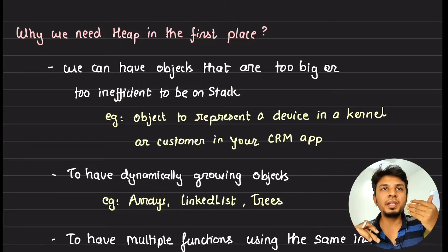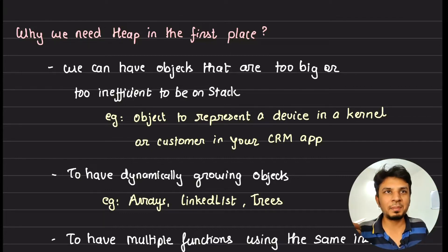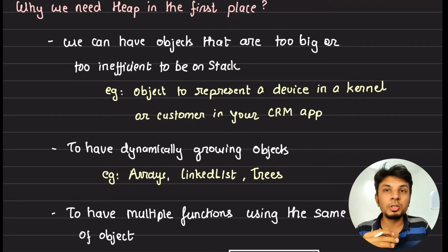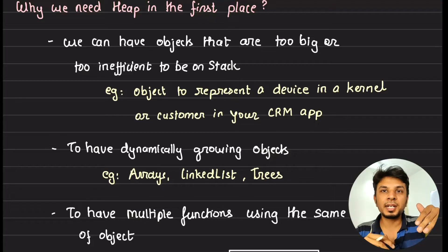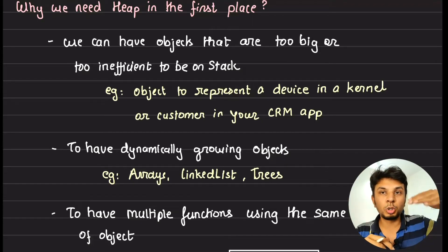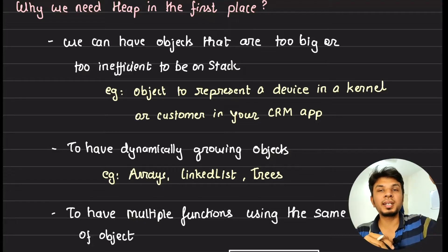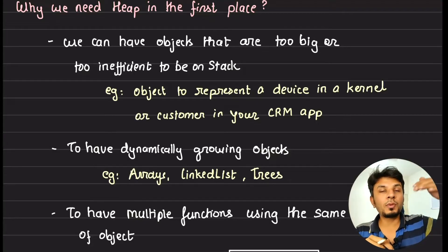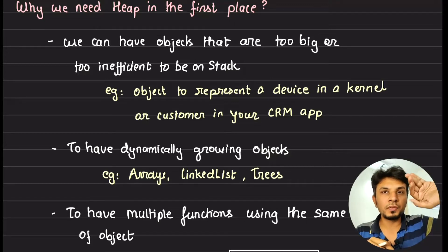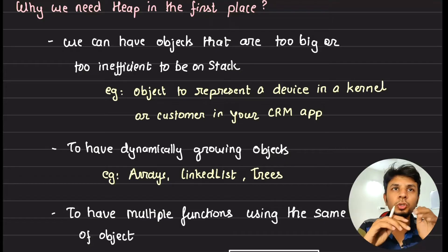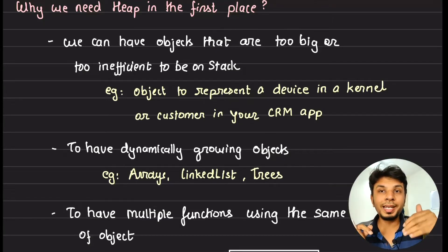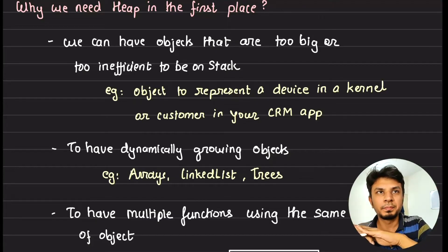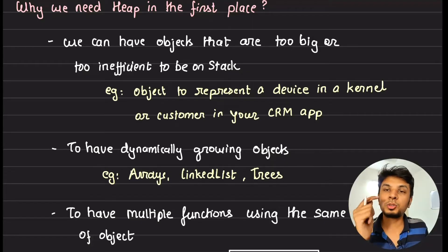There are a few very important reasons why we need heap. Reason number one: objects can be too big or too inefficient to be on the stack. For example, allocating 10 books requiring 1000 bytes on the stack would make the stack grow faster, and the stack has very limited memory — exceed it and you get an error. Also, anything allocated on stack is local; as soon as the function is popped, the data is gone.